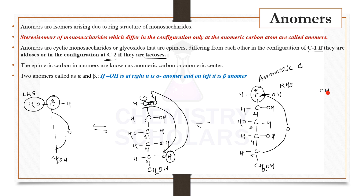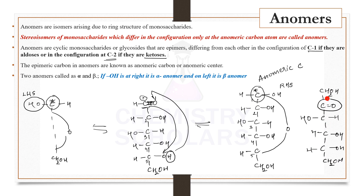In aldoses, the first carbon is the anomeric carbon because the functional group is on the first carbon. In ketoses, the second carbon is the anomeric carbon. Taking fructose as an example — carbons one through six — cyclization takes place between the second and sixth carbon atoms (or fifth, giving furanose or pyranose structures), making the second carbon the anomeric carbon. To summarize: OH on the right-hand side is the alpha anomer; OH on the left-hand side is the beta anomer. That covers anomers, epimers, and diastereomers.